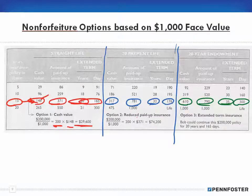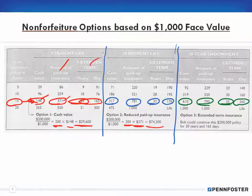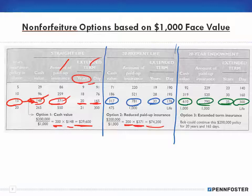For option two, reduced paid-up insurance, we still use 200 and multiply by the factor 371, giving $74,200 of paid-up insurance available. For option three, extended term — which is the default if you don't choose the other options — Bob could continue his $200,000 policy for 20 years and 165 days. If he does nothing, the policy continues at the current face value of $200,000 for that entire period because he's built up that much in cash value.